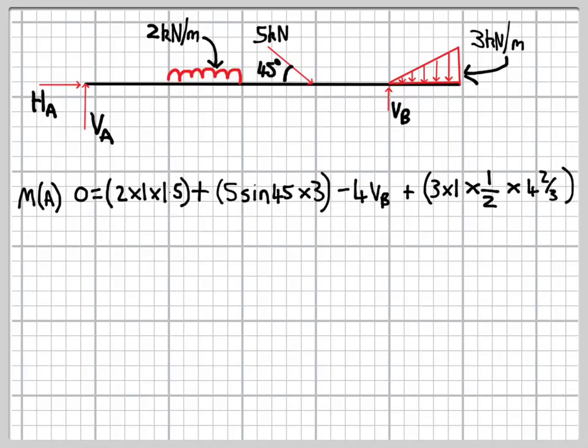So the left hand term, which is 2 times 1 times 1.5, that's the moment due to the uniformly distributed load. And the 2 times 1 is the total value of the load, so it's 2 kilonewtons acting over a length of 1 metre.